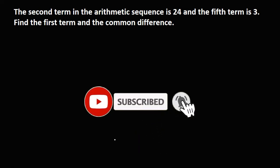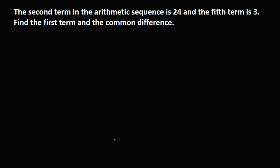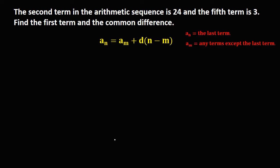Let's have this problem. The second term in the arithmetic sequence is 24 and the fifth term is 3. Find the first term and the common difference. Using the formula: a sub n equals a sub m plus d times n minus m, where a sub n is the last term, a sub m is any other term in the sequence, and d is the common difference.